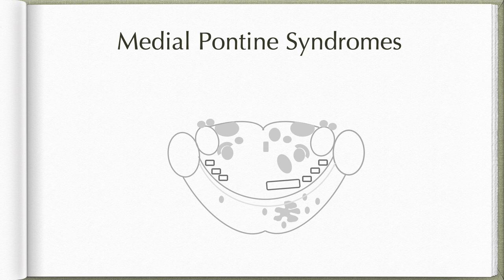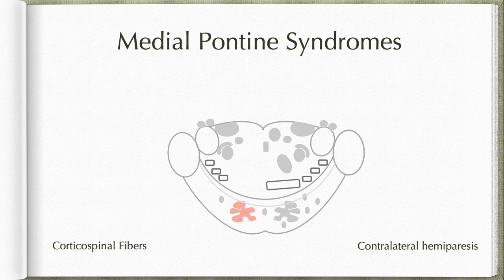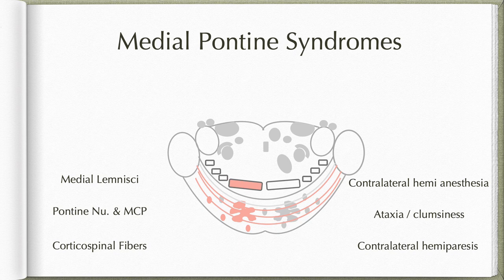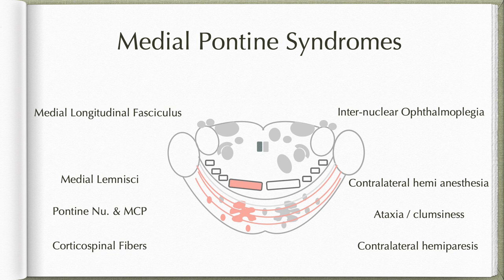Common features found in any of these medial pontine syndromes include involvement of corticospinal fibers resulting in contralateral hemiparesis; involvement of pontine nuclei and fibers of the middle cerebellar peduncles resulting in ataxia and clumsiness; involvement of medial lemniscus resulting in contralateral hemianesthesia including vibratory and proprioceptive sensations; and involvement of the medial longitudinal fasciculus resulting in internuclear ophthalmoplegia, where the patient will be unable to look to the affected side.